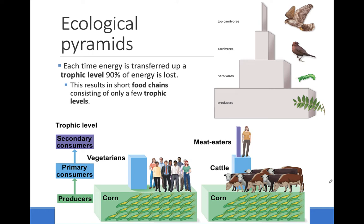Vegetables such as corn and soy are used to feed cattle in animal agriculture. Because of the energy loss, it takes a lot of corn to feed relatively few cows. Energy is lost again when humans eat the meat of the cow, and ultimately this large amount of corn only feeds one human.